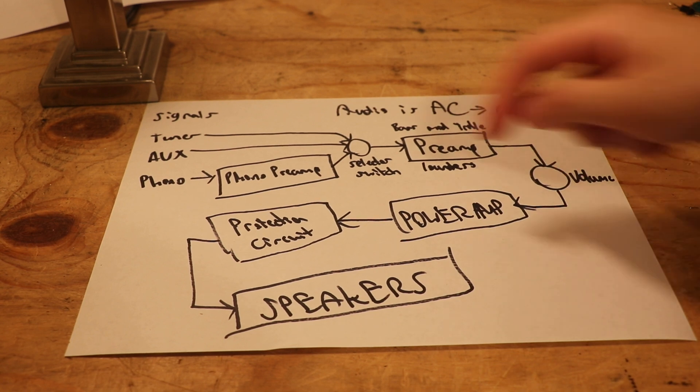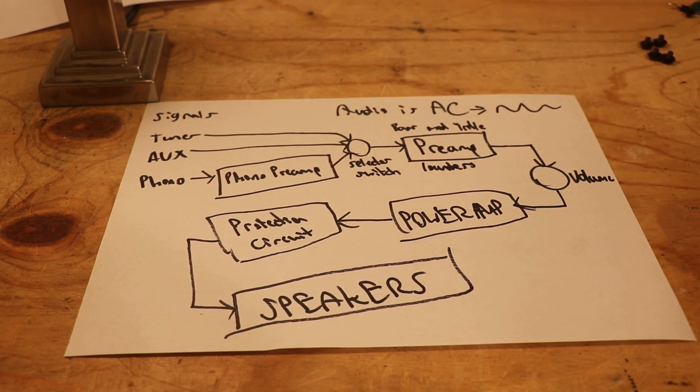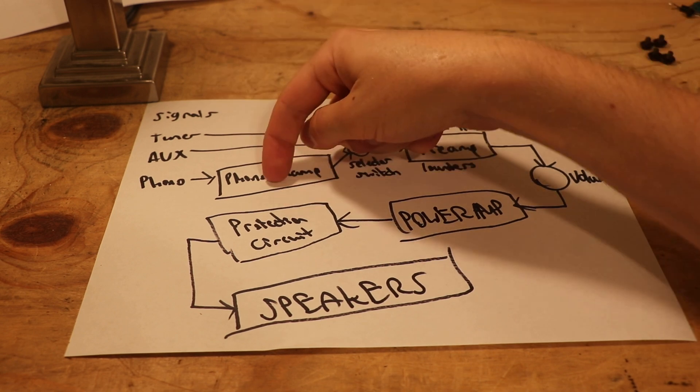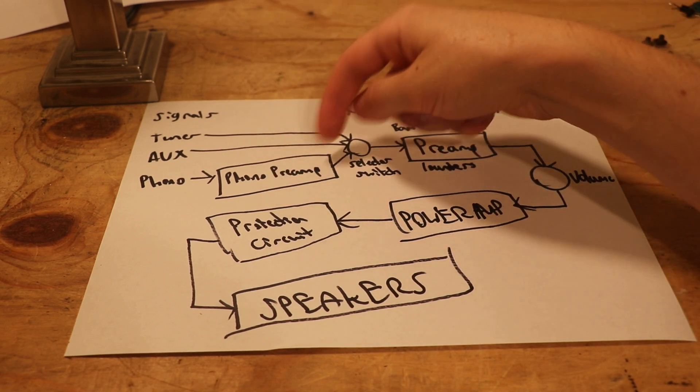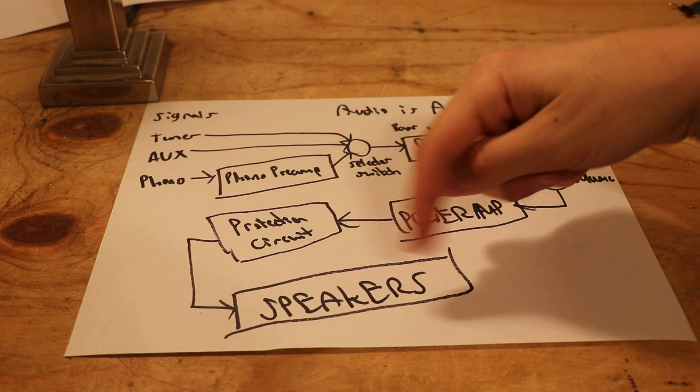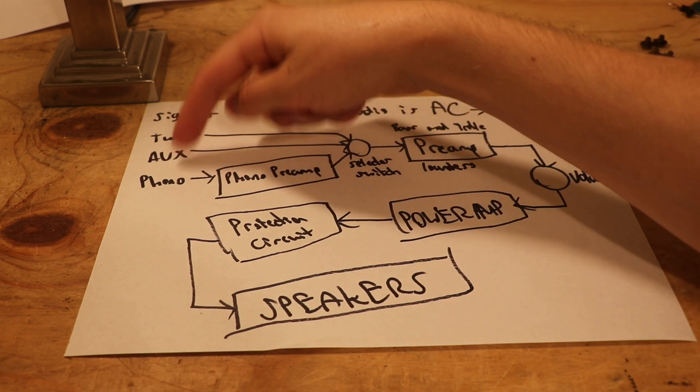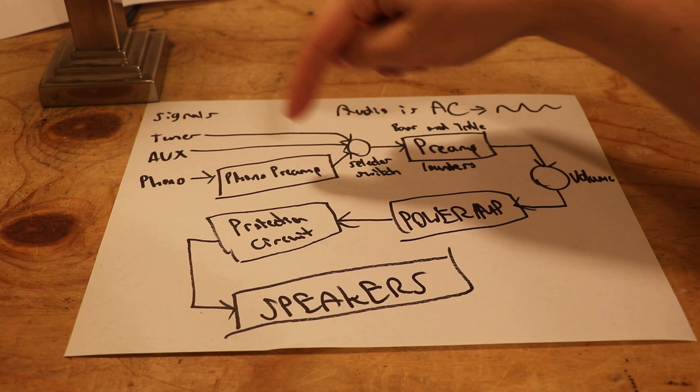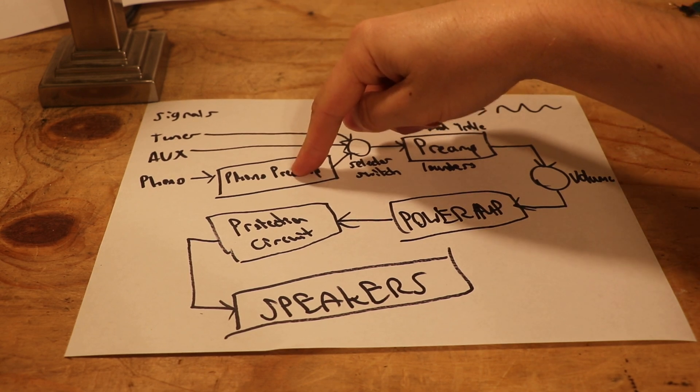Well, maybe your selector switch is dirty and it needs to be cleaned. So, get out the Deoxit D5, clean off your selector switch. What if the only issue you're having is with your phono preamp? Well, it's probably your phono preamp. If everything else works just fine, it's all making it to the speakers and sounding good. These two are working, but this one's not. The issue is probably right here.